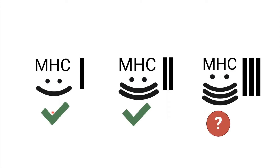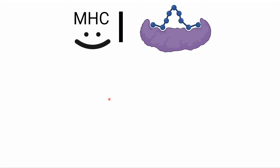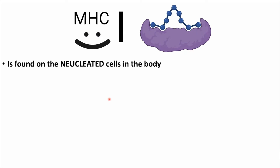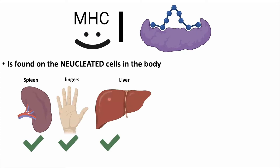Today I will talk about MHC class 1 and MHC class 2 in detail. MHC class 1 is found on the surface of every nucleated cell in the body — the spleen, fingers, liver, B-cells, and any nucleated cell.